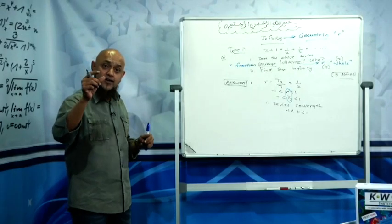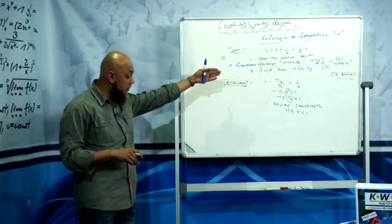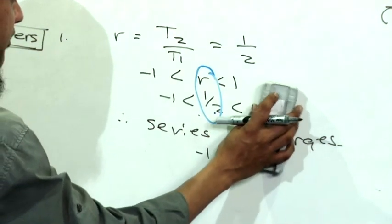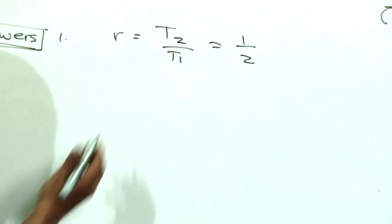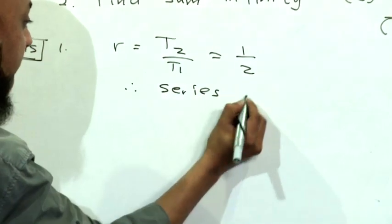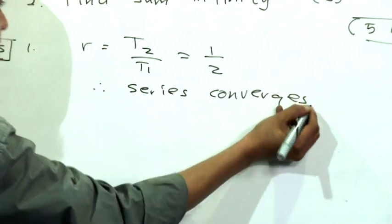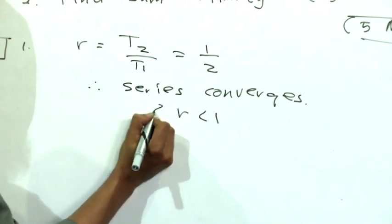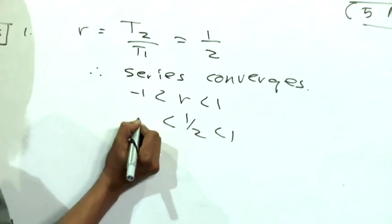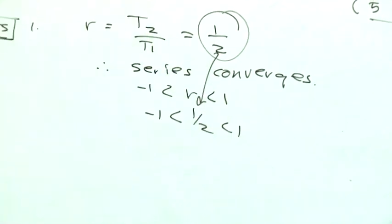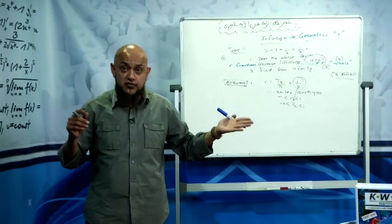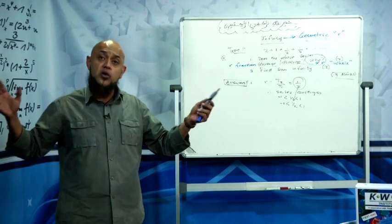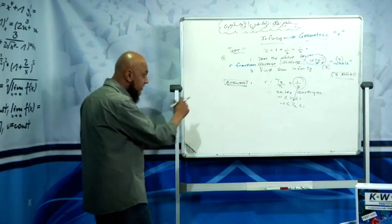Therefore the series converges because R is less than one, greater than minus one. Calculate R and then say whether it converges or diverges. You can calculate R to be a half and say therefore the series converges. That was the answer to your first part. Why? Because R less than one, greater than minus one. R is a fraction, it lies between negative one and one, so therefore it must be convergent. As we add more and more terms, the sum will move towards a number.